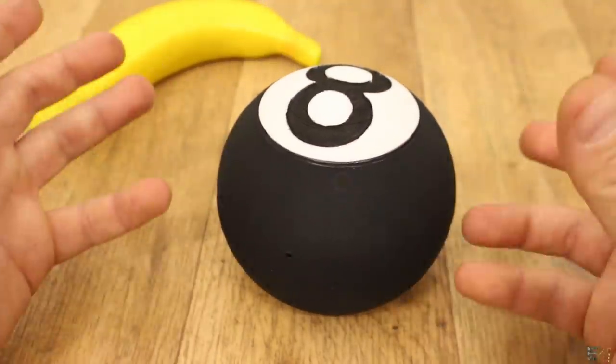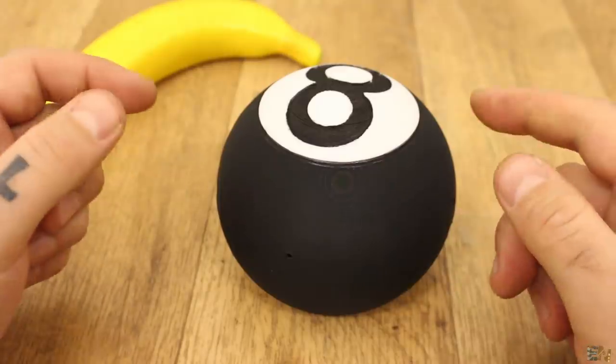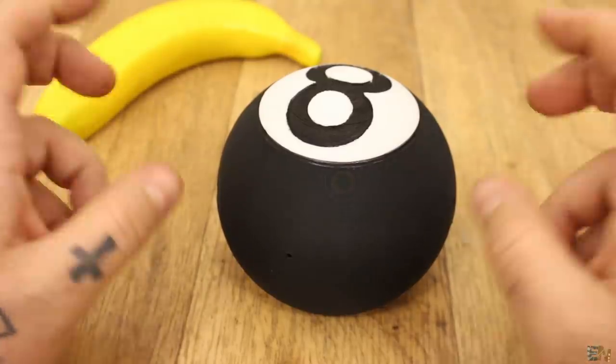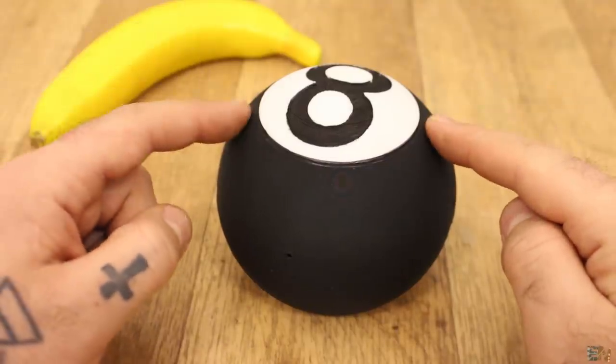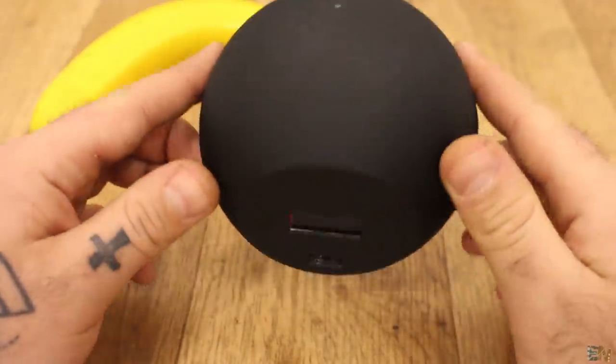As you can see, each time that we flip the ball, we get a different answer and that will be a magic answer. So let's see how to make this with an Arduino inside, a DF player to play the sound, and an IMU module to detect when we flip the ball.